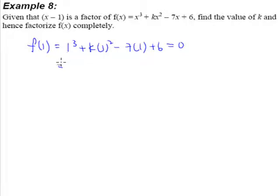So we'll end up with one equation and one unknown. So it shouldn't be that difficult. This would be 1 plus k minus 7 plus 6 is equal to 0. And you realize that 1 minus 7 plus 6, k is equal to 0.